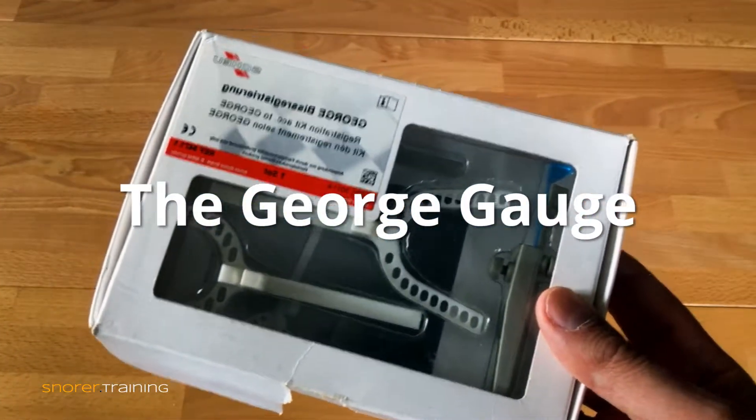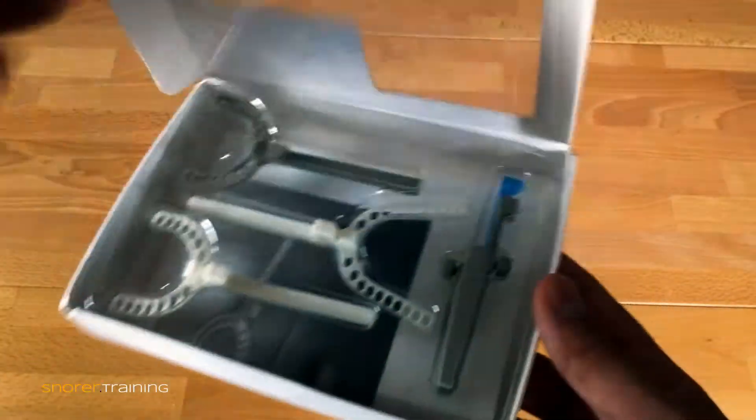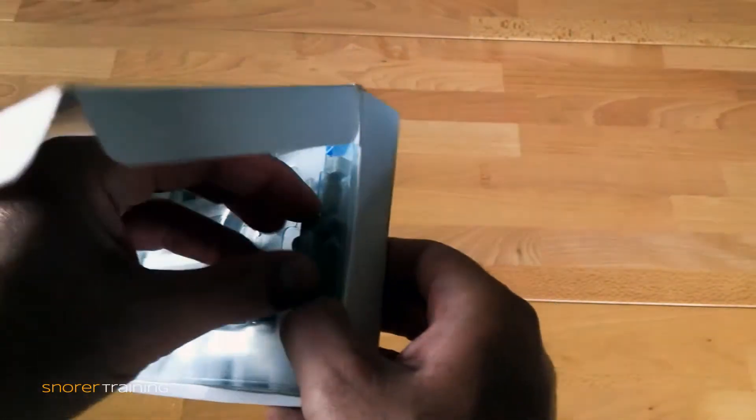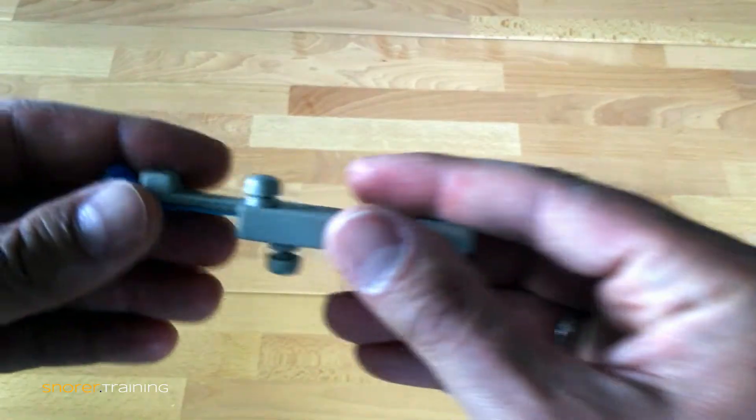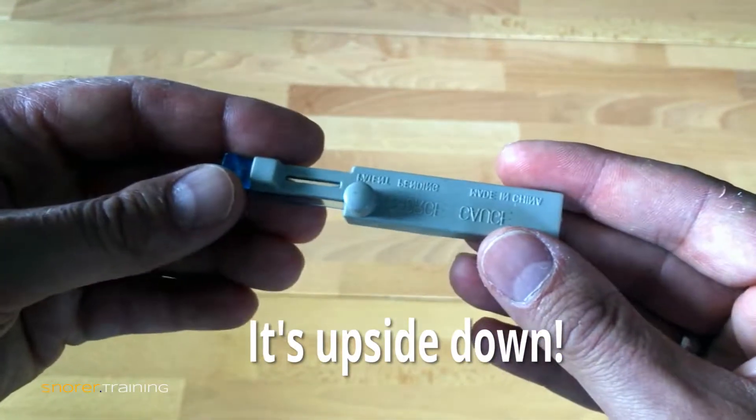The George gauge, here it is. Comes in a box. See this one's been opened before. Open it up and here's the handle, the important bit. Take that to one side, here it is.